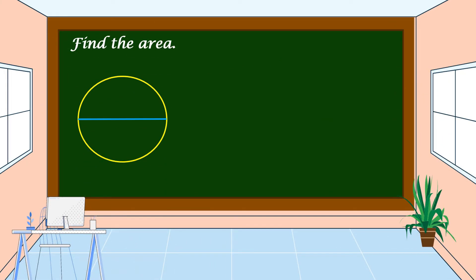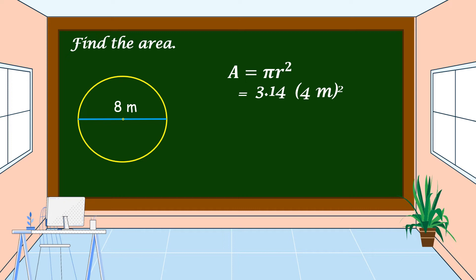Another example: the diameter of this circle is 8 meters. To find the area, we're going to use this formula: pi times radius squared. The estimated value of pi is 3.14. What is the radius of a circle if the diameter is 8 meters? Yes, you are right — it is 4 meters.